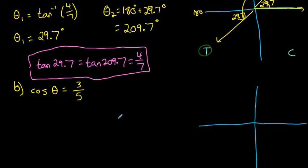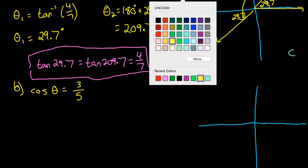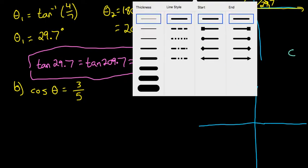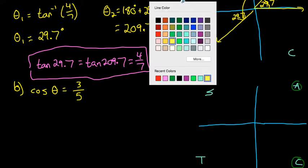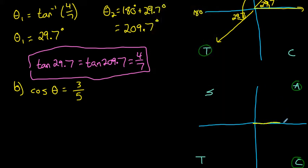Let's do one more example. Cosine of angle theta equals 3 over 5. There are two possible angle thetas that have this ratio. Remember your CAST rule — cosine is positive in two quadrants. Since we have a positive cosine ratio, the angle is either in the first quadrant, where all ratios are positive, or the fourth quadrant, where the cosine ratio is positive. So we should get two possible answers.